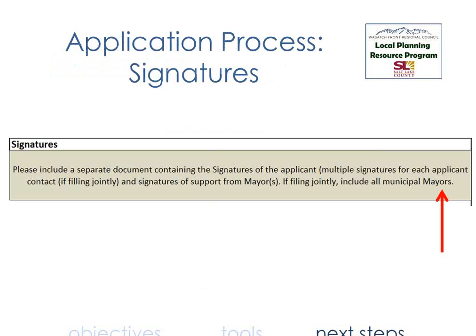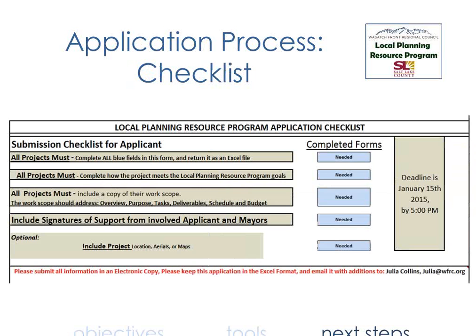One essential part of the application process is buy-in by the mayor or head of the community. We require a signature from the mayor so that he or she knows about the application and the expectations regarding staff time commitment and the match itself. All projects need to complete five areas: check that they meet local planning resource goals; provide an overall scope of work with deliverables, schedule, and budget — six pages maximum; and include the mayor's signature of support.